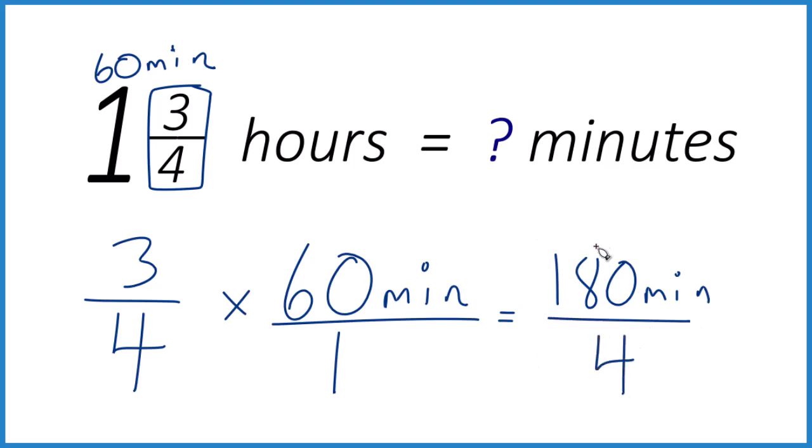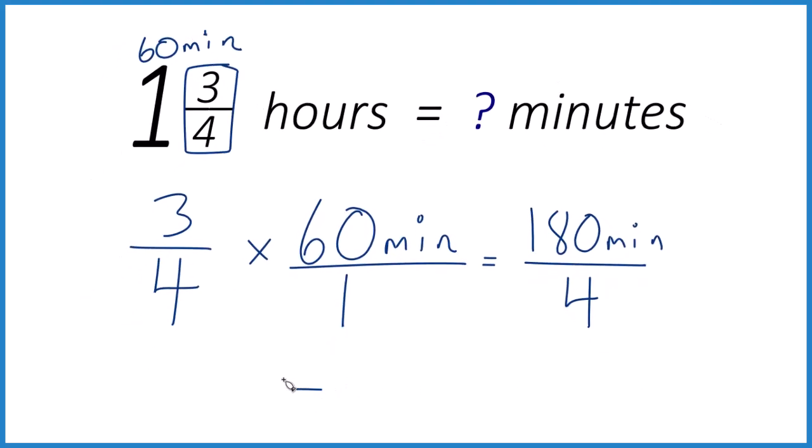So you can do this on a calculator or longhand. 180 divided by 2 is 90, and 90 divided by 2 is 45. So 180 divided by 4 does equal 45, and that's 45 minutes. So three-fourths of an hour is 45 minutes.